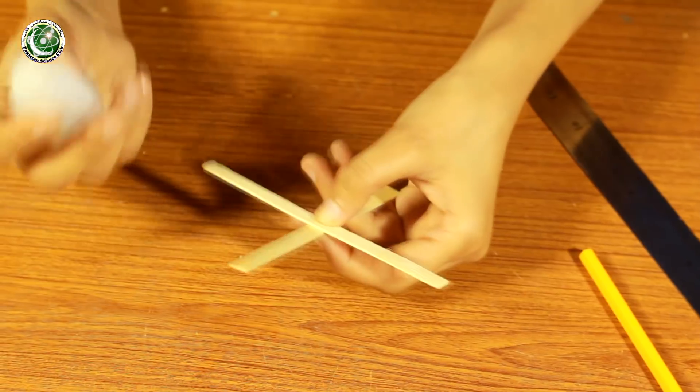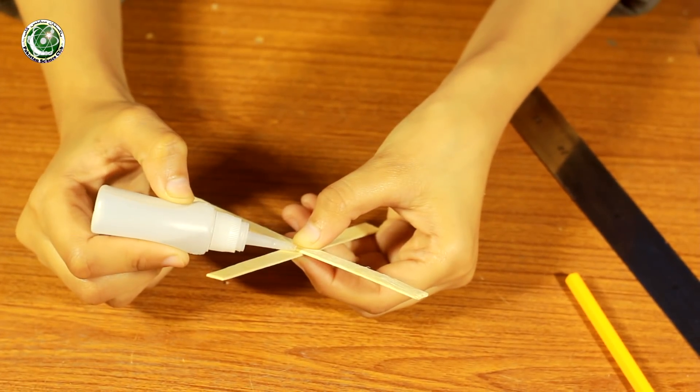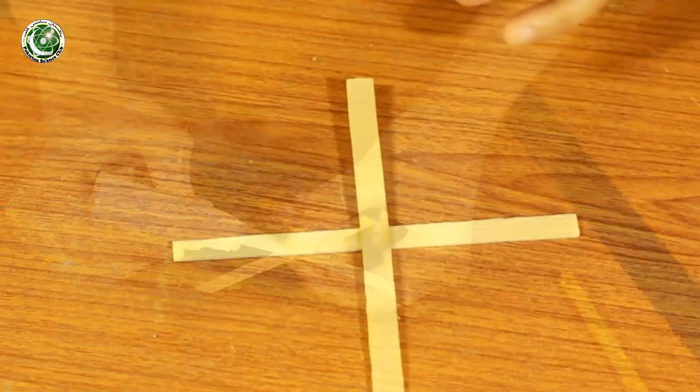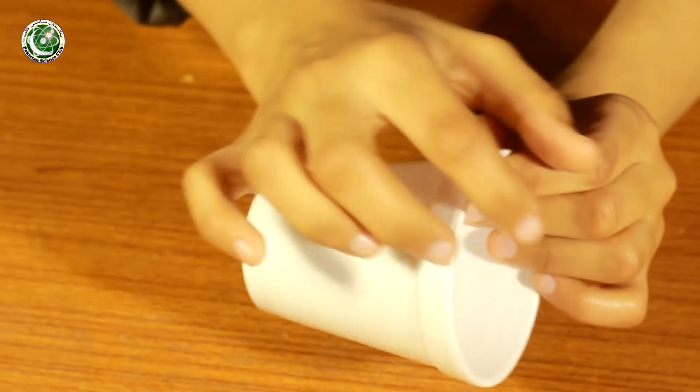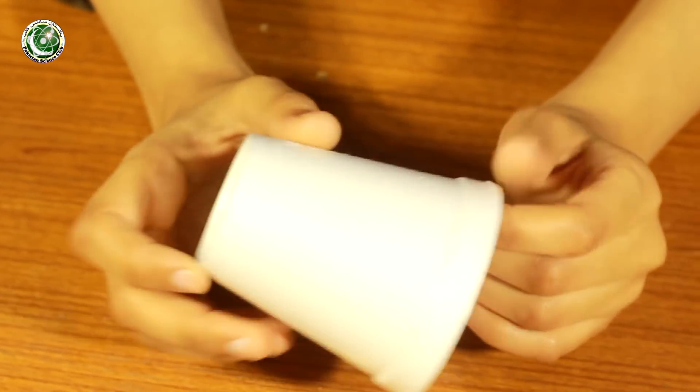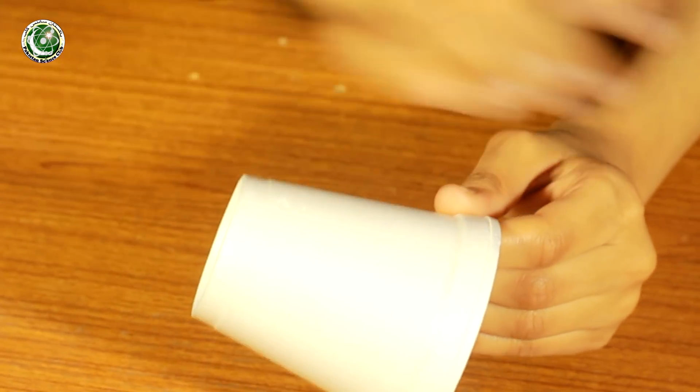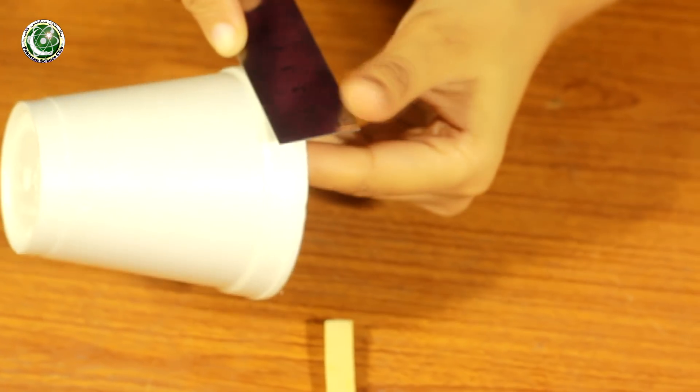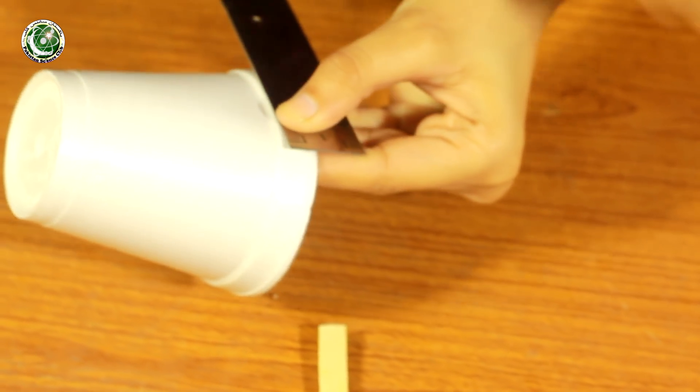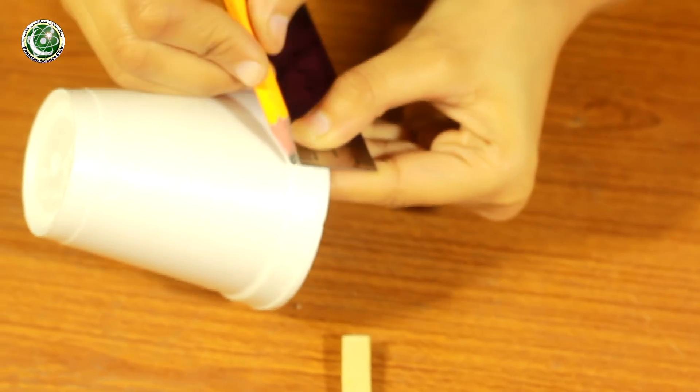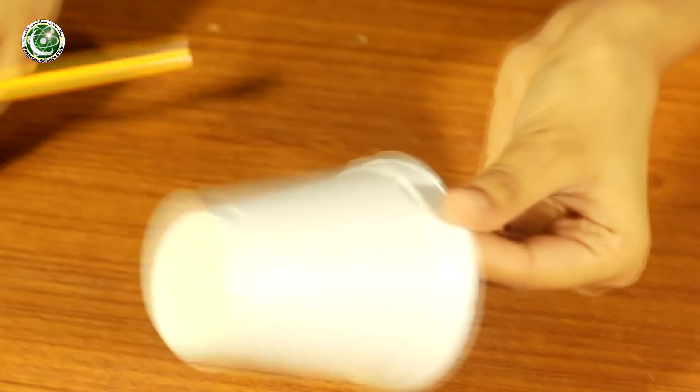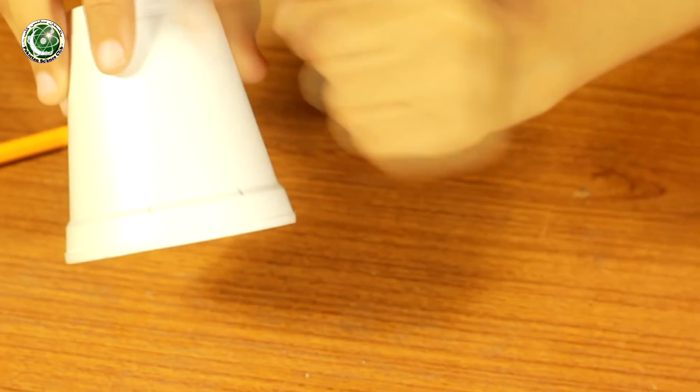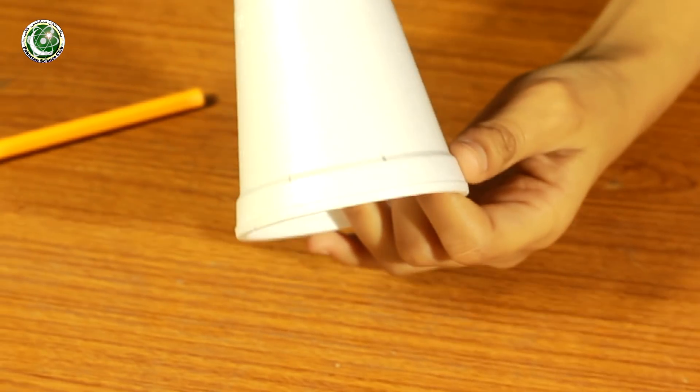Then, we will join them with super glue. Then, we will use this disposable cup to make wind blades. It is very easy to make wind blades. You need to use 3 cm to make wind blades.